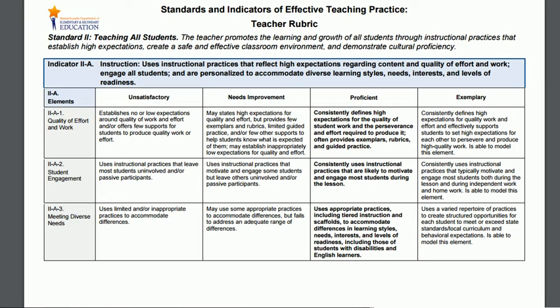If a candidate is able to demonstrate practice with the quality of the proficient descriptor, the next step is to consider whether he or she is able to do so with all students. Look at the needs improvement descriptor. Notice the phrase 'fails to address an adequate range of differences.' That phrase speaks to the scope of practice. If the candidate is able to execute the practice with quality but for only a subset of students, not all students, an assessor might conclude that the scope dimension should be rated at the needs improvement level.